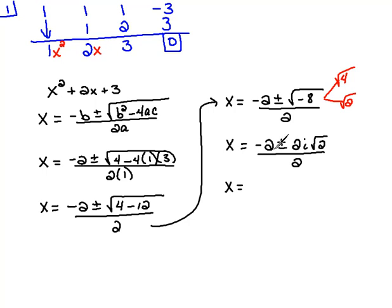And then I could pull a 2 out of the numerator, which would be minus 1 plus or minus i square root of 2, all over 2, and then our 2's would cancel.